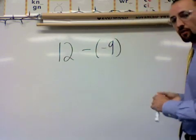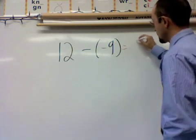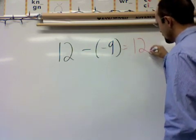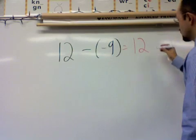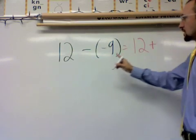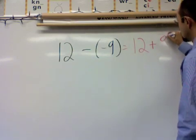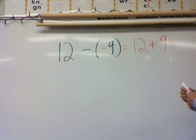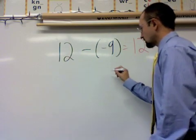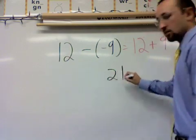My first step is to rewrite this. 12 stays the same. I'm going to do the reverse operation, so I'm going to add the opposite of negative 9, which is just 9. So now I have the simple problem of 9 plus 12, and I get an answer of 21.